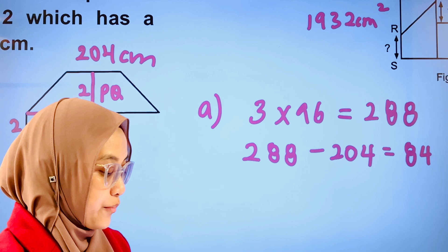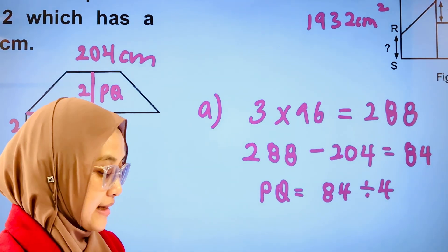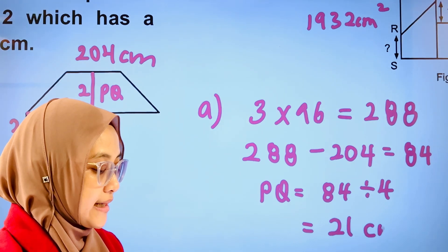Therefore, the length of PQ is equal to 84 divided by 4, and that gives us 21 cm.